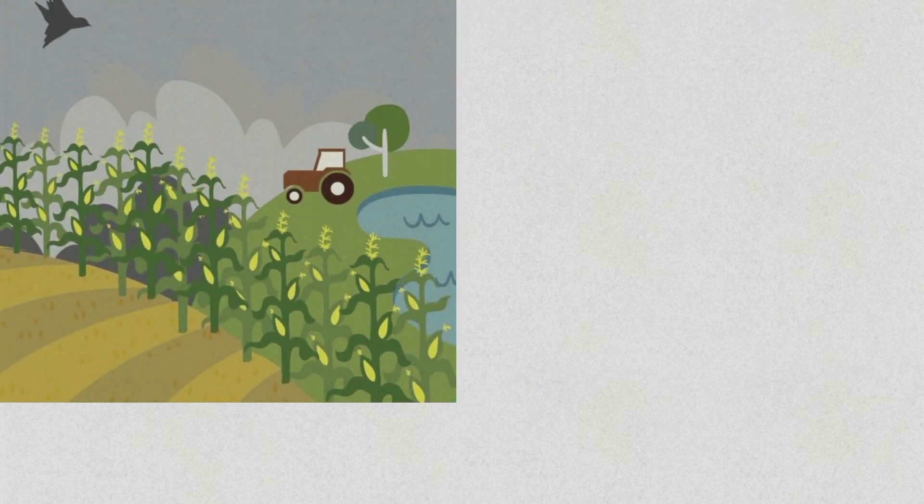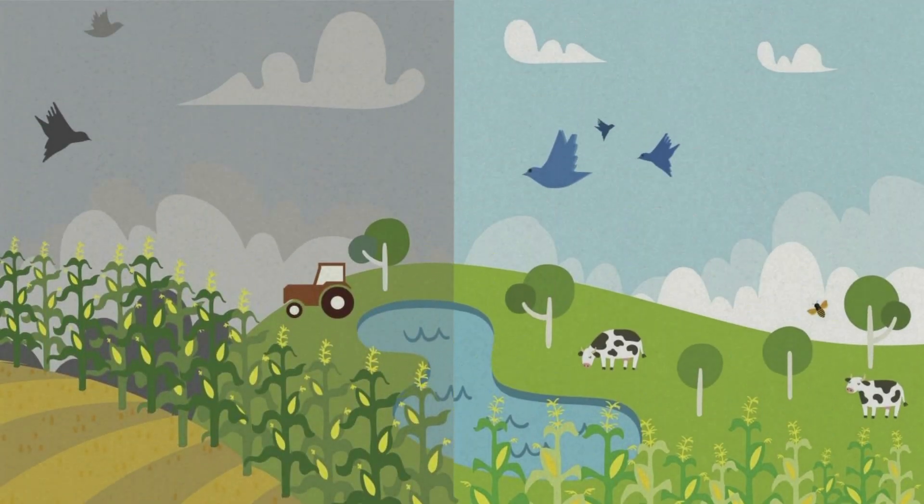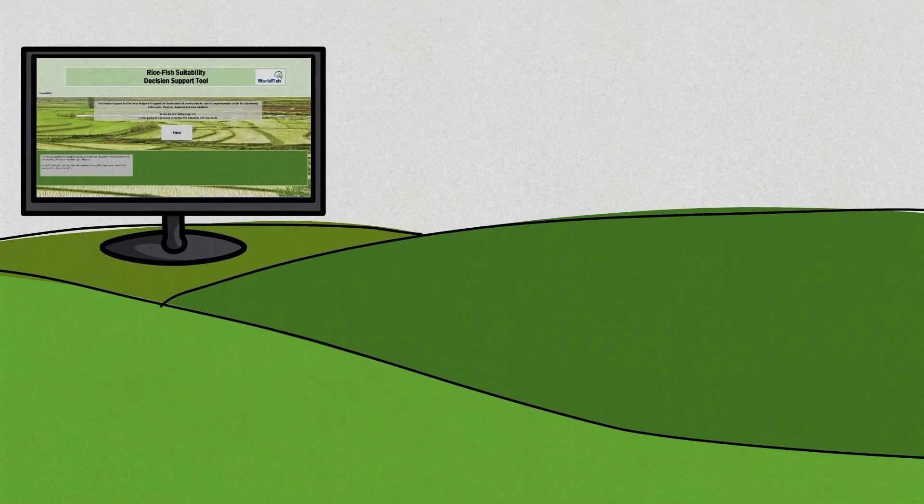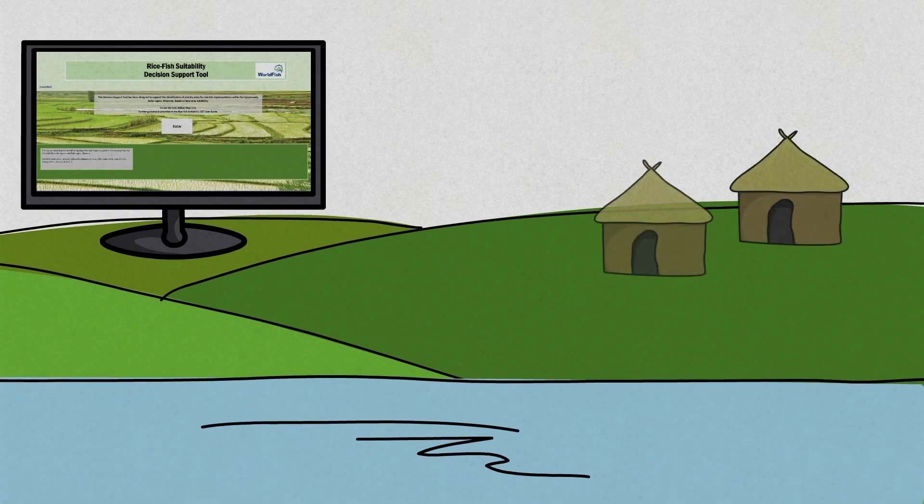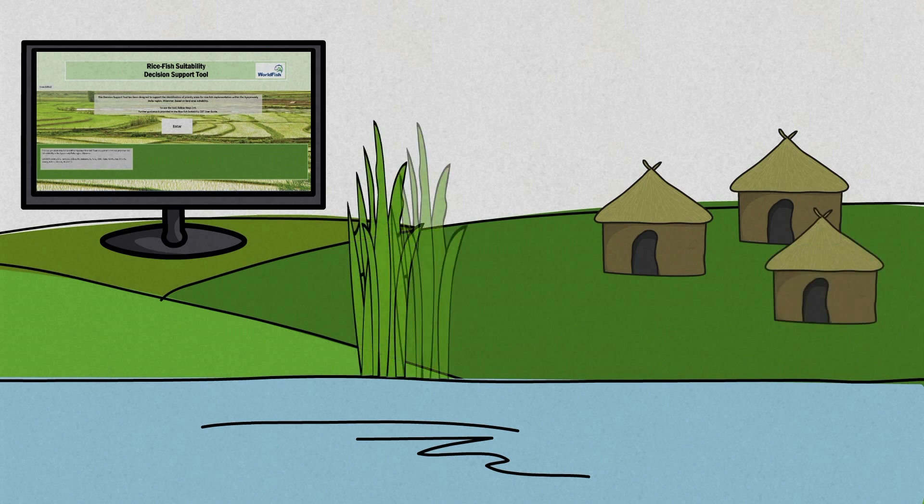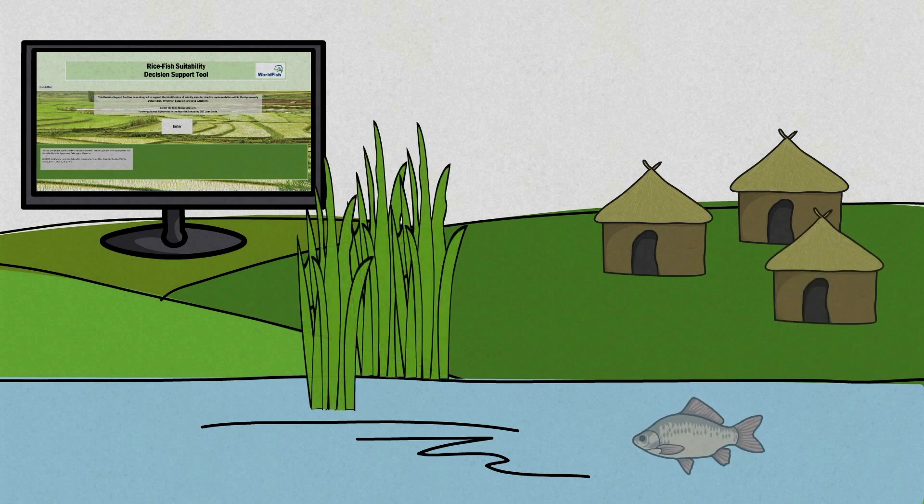This will support a positive transition in food system transformation, with the decision support tool facilitating a focus on enhancing water and land use to provide regional populations with resilient, nutritious and sustainable food resources into the future.